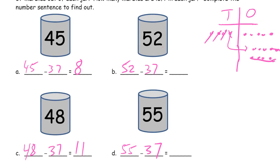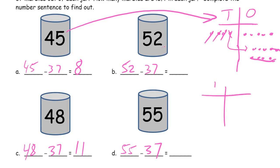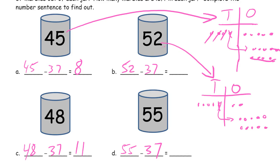Now we'll do 52 minus 37. Set up 5 tens and 2 ones. I can't cross out 7 ones because I only have 2, so I unbundle a 10 into 10 ones. Now I can cross out 7 ones — 3 left, because 7 and 3 make 10. Then subtract 3 tens — I have 1 ten and 5 ones left: 52 minus 37 is 15. And 55 minus 37 is going to be 3 more, because 55 is 3 more than 52 — so 18.